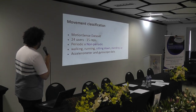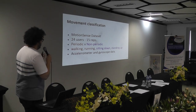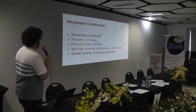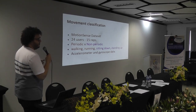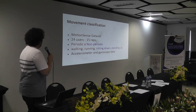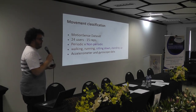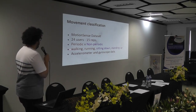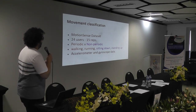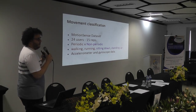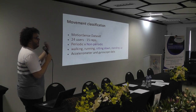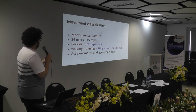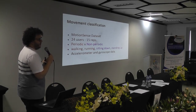The MotionSense dataset is comprised of 24 users doing usual activities such as walking, running, sitting, and standing. They perform 15 repetitions of each of those activities. We labeled walking and running as periodic movements, and sitting down and standing up as non-periodic, so we can later use the period information for those two cases.